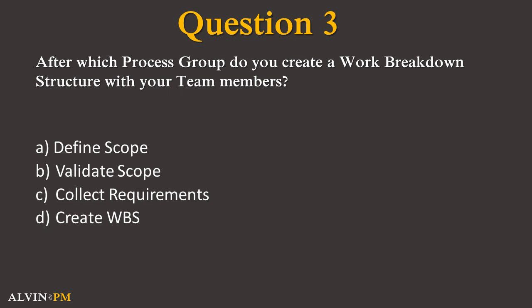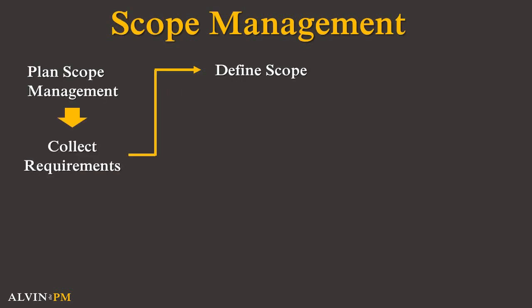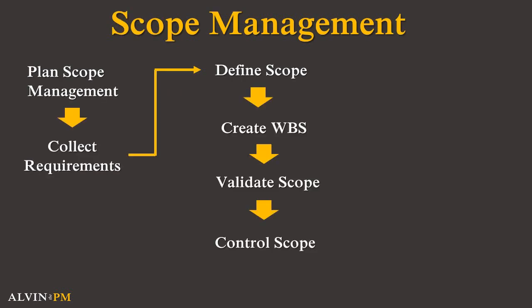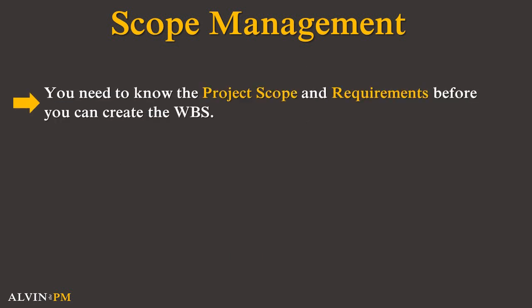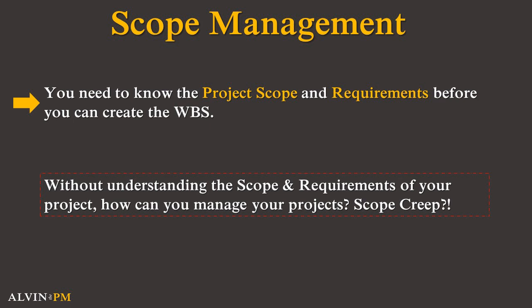This question requires you to understand the correct flow of the different process groups for scope management. If you selected A, then you are correct. Only after you and your team have defined the scope of your project can you work with your team to create a WBS. You need to have a clear understanding of your project's scope and requirements before you can begin identifying and breaking down your project's work. If you don't know what your scope is or your requirements are, how can you effectively manage and plan out your project without preventing scope creep?